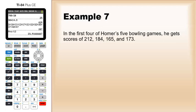One more. In the first four games of Homer's five bowling games, he got scores of 212, 184, 165, and 173. So one more game left. If I put these in order, that would be 165, 173, 184, 212, and one unknown.